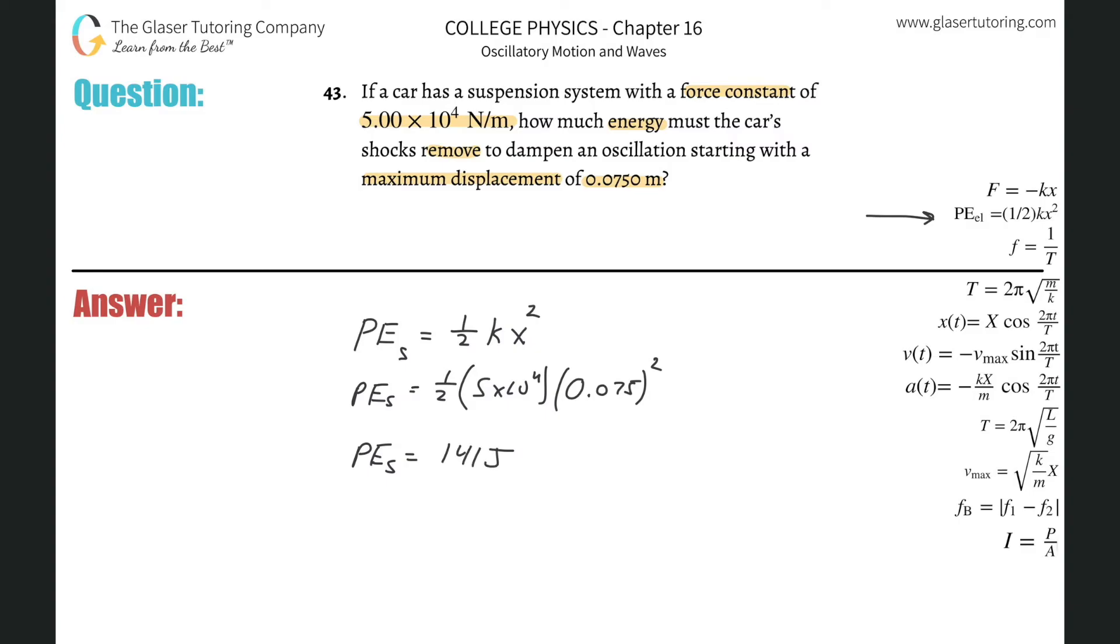Now this is the maximum potential energy that is inherent in that spring. And therefore, to dampen such oscillation, that means we must remove this amount of energy,